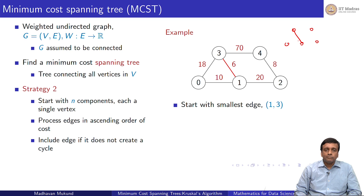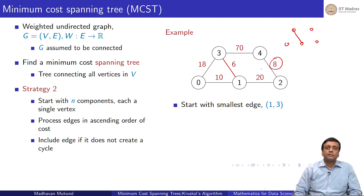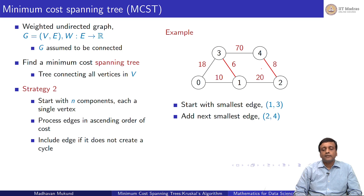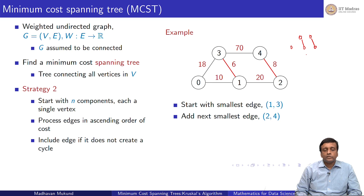In Prim's algorithm you would take this component and extend the tree. In Kruskal's algorithm, you just take the smallest edge which connects two components and makes them into a larger component. In this case, I jump from 6 to 8 — that is the next smallest edge and it connects two components which are separate. So I am allowed to add that, and I now have three components: vertex 0 separate, then 1 and 3, then 2 and 4.